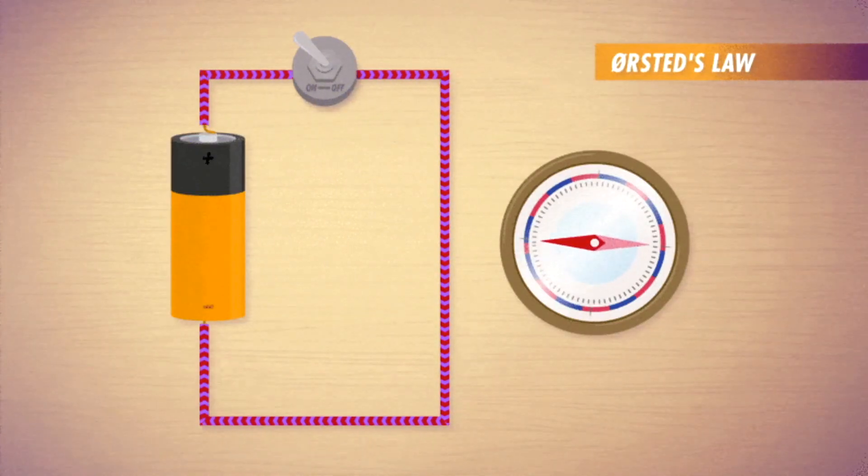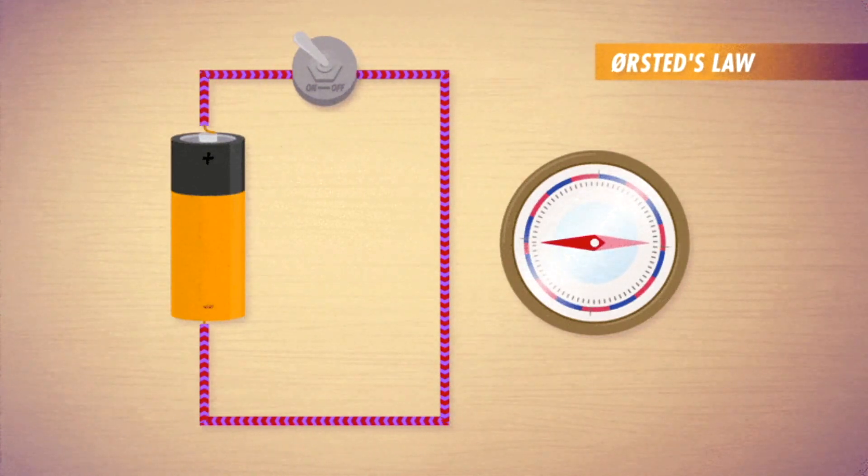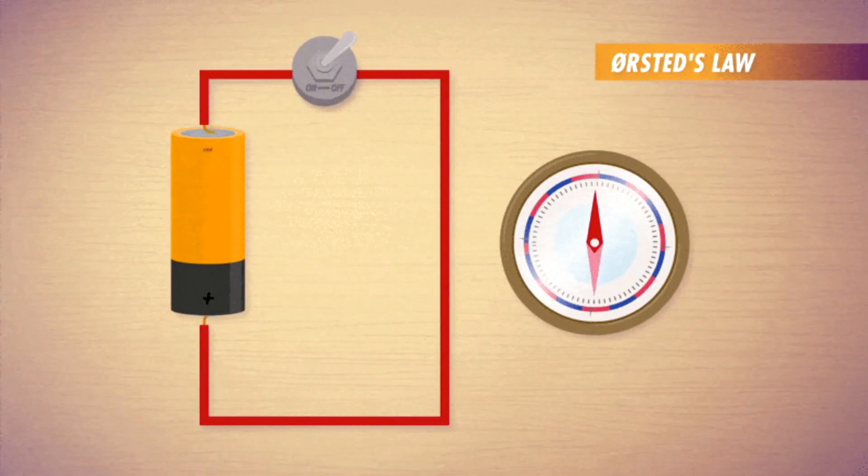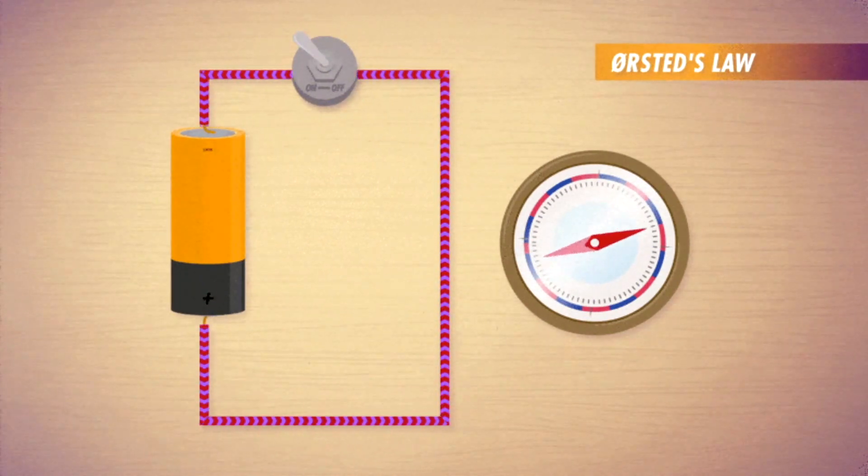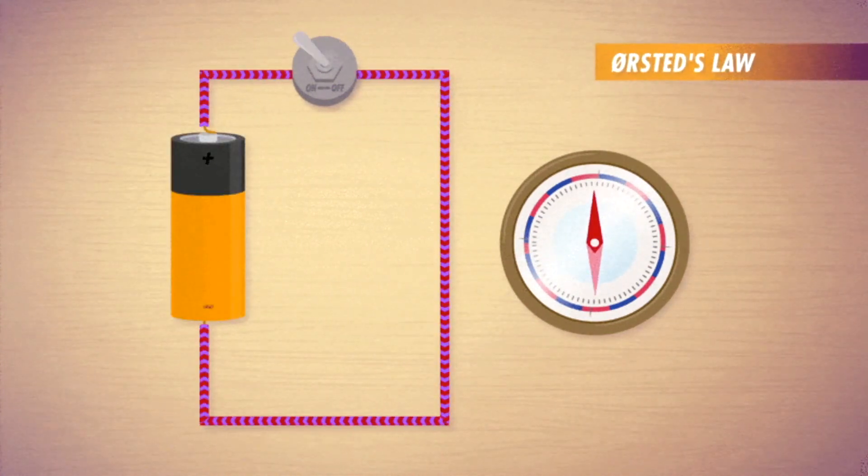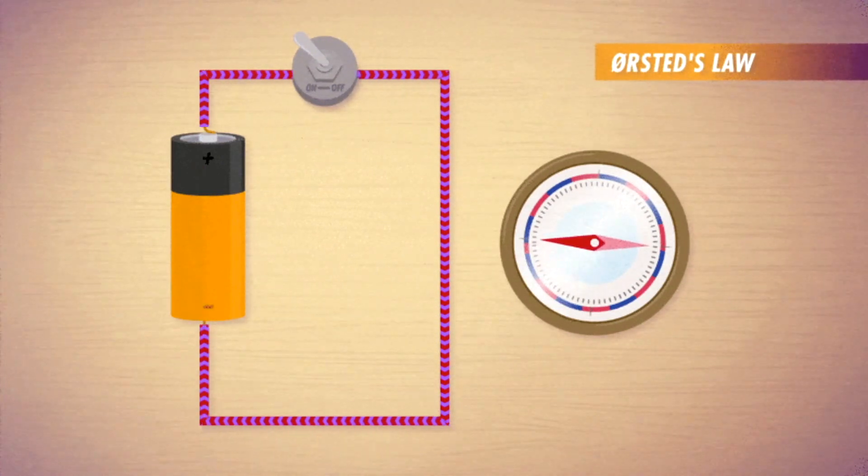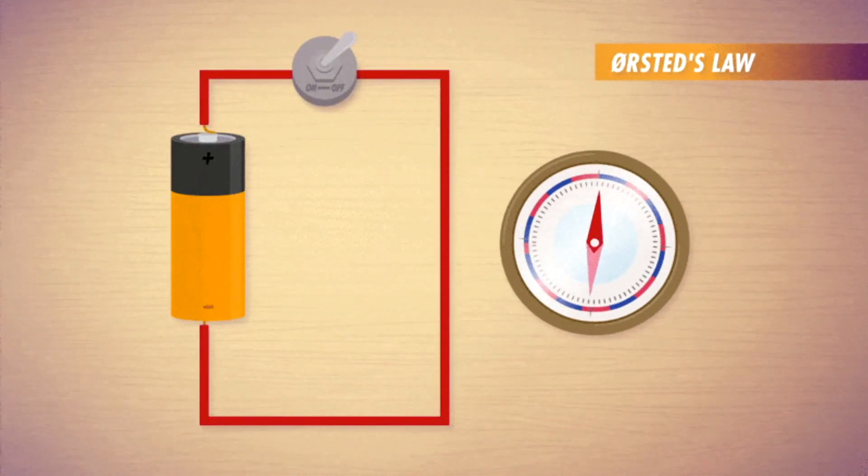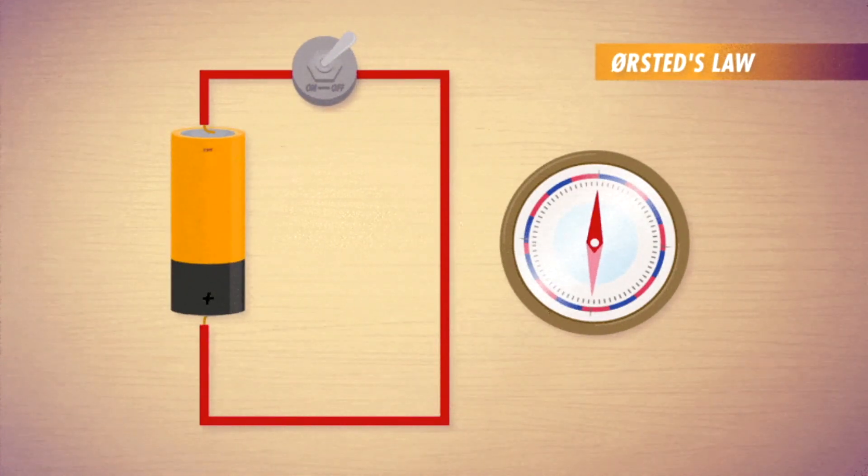He turns on the current that runs through the wire and he notices that the needle in the compass starts to move. When he turns the current off, the needle goes back to where it was. Then he runs the current through the wire in opposite direction and sees the needle move the other way.